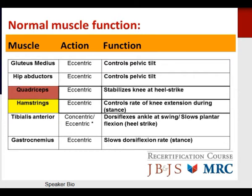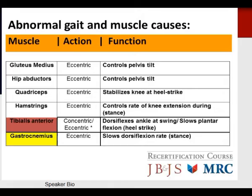Looking at normal muscle function in the lower extremity as it relates to gait, the majority of muscle actions in this slide are eccentric contractions — which makes sense given that eccentric contraction is the most efficient form of muscle activity. Key muscles include the gluteus medius and hip abductors controlling pelvic tilt, the quadriceps and hamstrings stabilizing the knee at heel strike and extending it during stance, and the tibialis anterior and gastrocnemius managing dorsiflexion and plantar flexion.